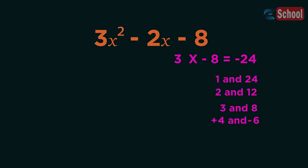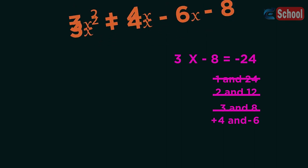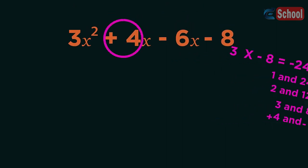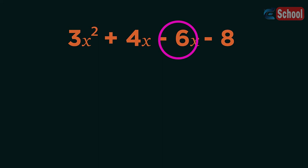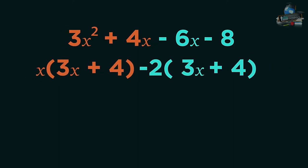Plus 4 minus 6. We now need to rewrite the question with the plus 4 and minus 6. So plus 4x minus 6x. Split the quadratic into 2. So factorise 3x squared plus 4x. And then factorise minus 6x minus 8.